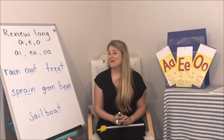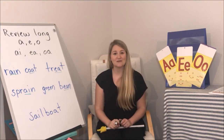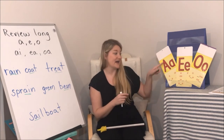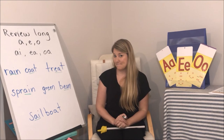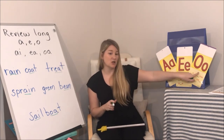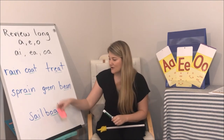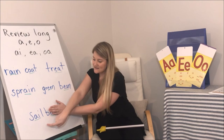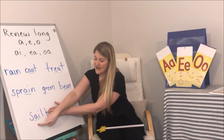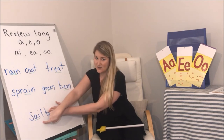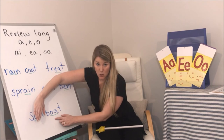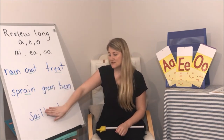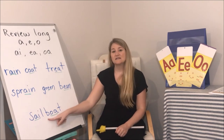Now I have a multisyllabic word and I know exactly what to do. First, tell me those vowel sounds you see. I see A-I together, which makes A. And I see O-A, which is going to make that long O sound. I'm going to cover up my second syllable. Ready? S-A-I-L. What's the word? Sail. That first syllable is sail. Now the second syllable: B-O-A-T. What's the word? Boat. First syllable sail, second syllable boat — put it together: sailboat!